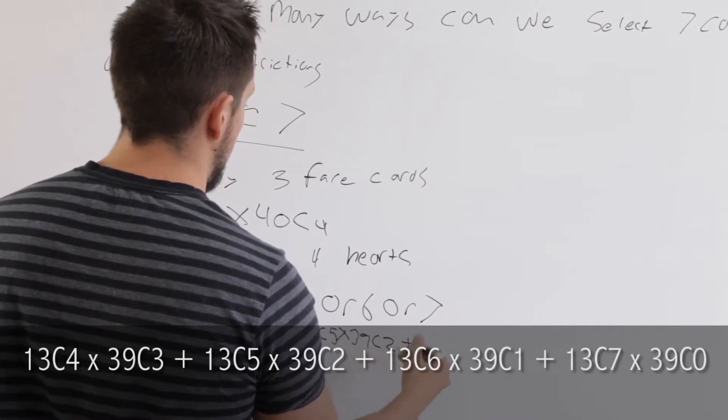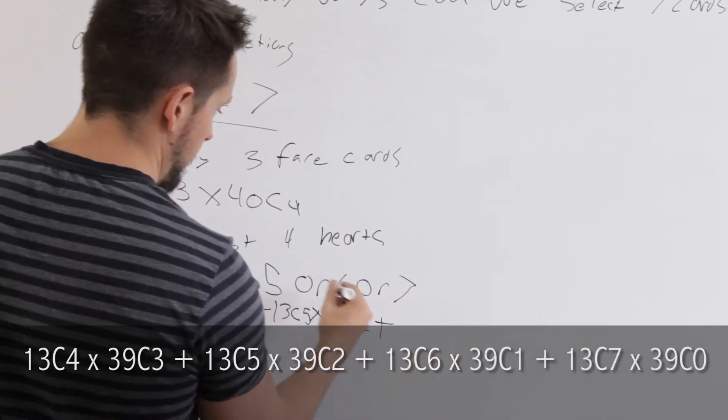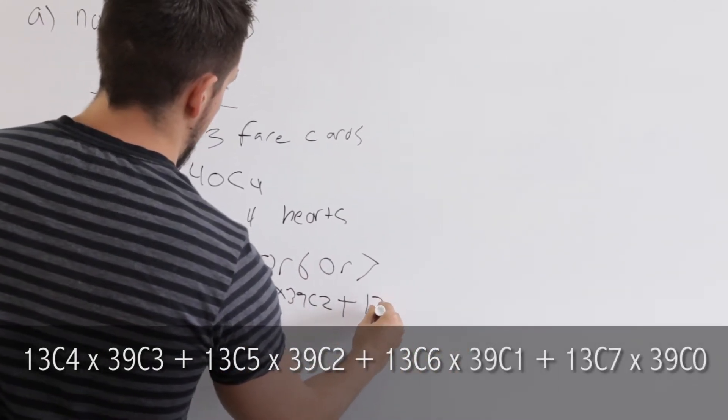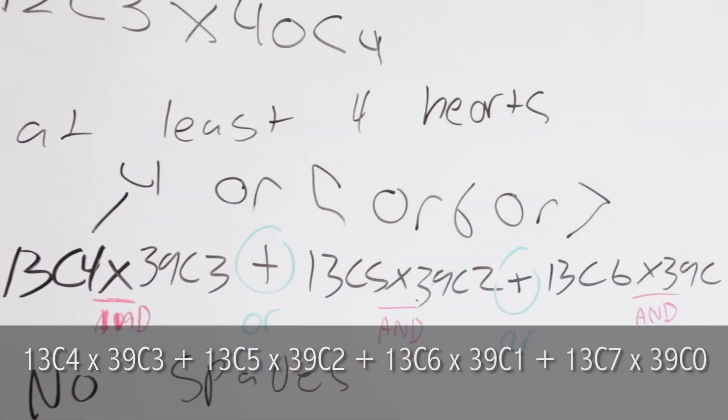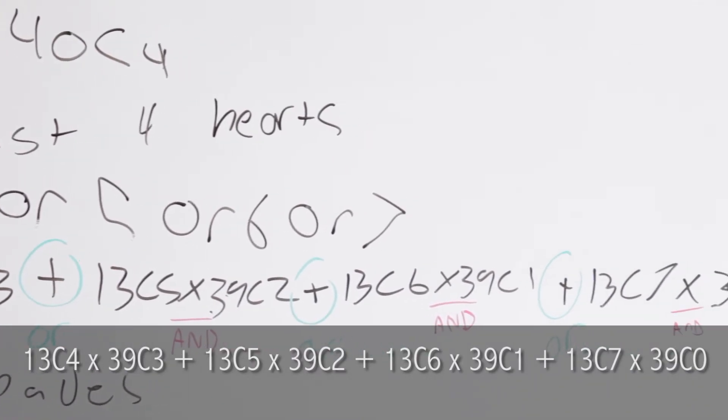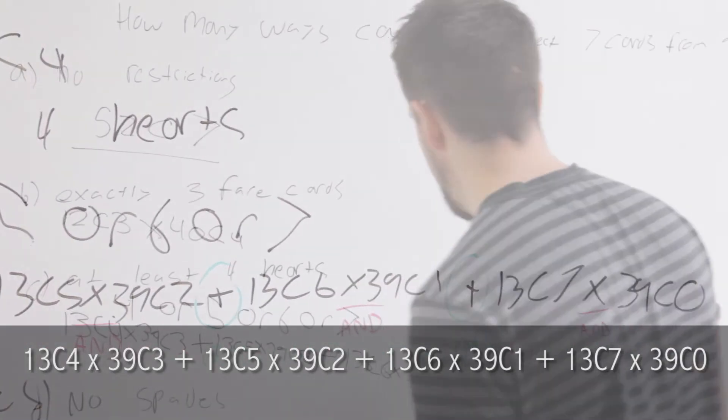Now we have or six. So we do plus. Plus to represent the or. Same thing. 13 choose six times 39 choose one. And then finally to finish it.